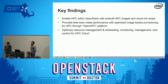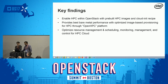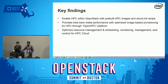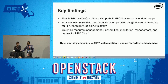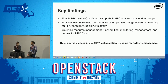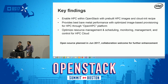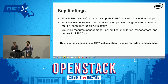The key findings from our experiment show that by using pre-built HPC images and cloud-init recipes, we can enable HPC in OpenStack in a seamless way, providing best-in-class performance for HPC use cases. Importantly, all of this will be open-sourced in January. We welcome collaboration from anyone working on HPC integration with OpenStack, Barometer, Ironic projects, disk image builder, or any OpenHPC use cases.